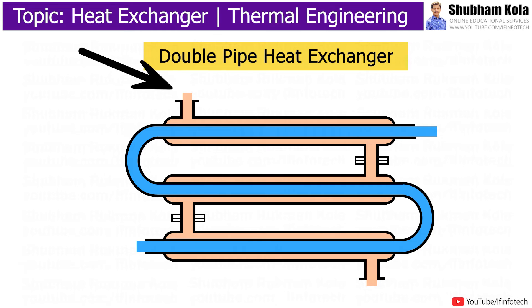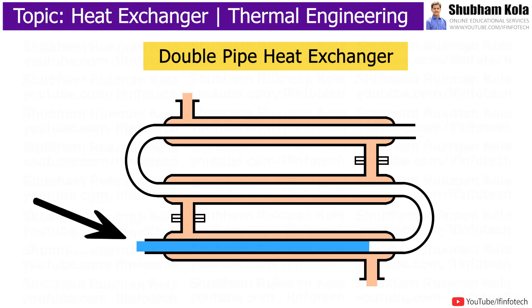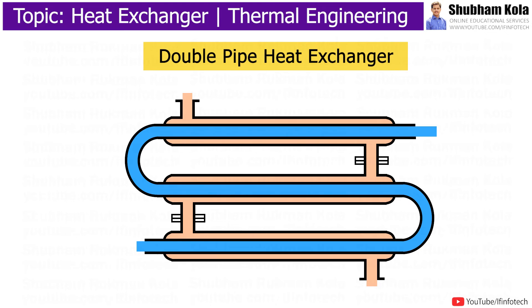During working, hot fluid enters the large pipe at the top, while cold fluid flows from the bottom end of the inner pipe. The cold fluid absorbs heat and becomes hot, and it comes out from the other end of the pipe.